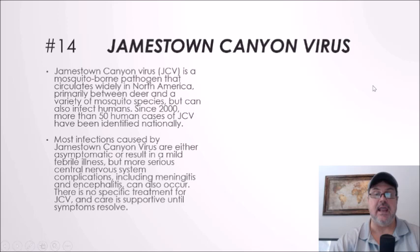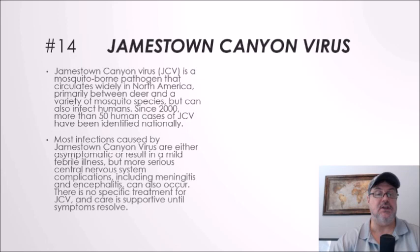Number fourteen: Jamestown Canyon virus. We've seen five cases in New Hampshire of this virus this year. Jamestown Canyon virus is a mosquito-borne pathogen that circulates widely in North America, primarily between deer and a variety of mosquito species, but can also affect humans. Since 2000, more than 50 human cases have been identified nationally. Most infections are asymptomatic or result in mild febrile illness, but more serious central nervous system complications including meningitis and encephalitis can also occur. There is no specific treatment; care is supportive until symptoms resolve.